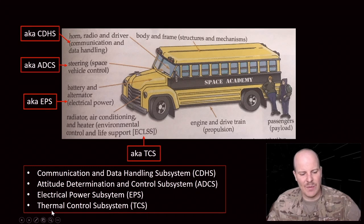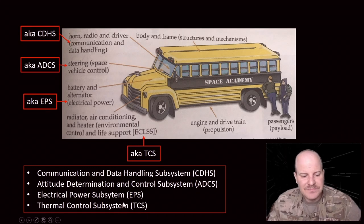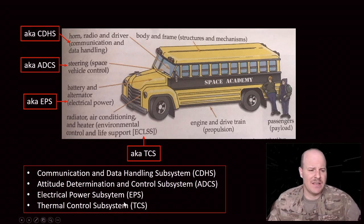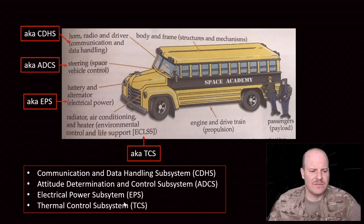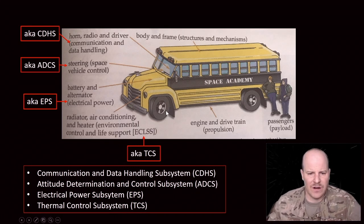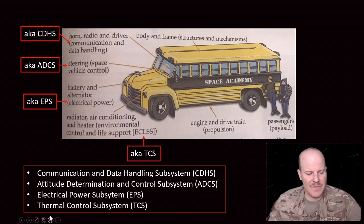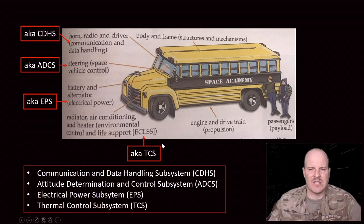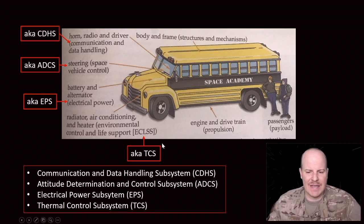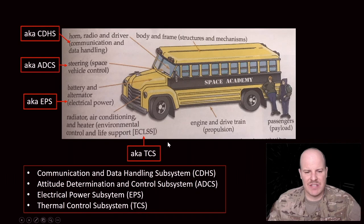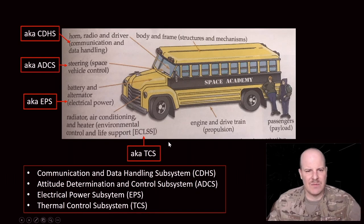The EPS, or Electrical Power Subsystem, is really like the battery and alternator for our bus, and for our spacecraft it's going to be our solar panels. And then lastly, the TCS, or Thermal Control Subsystem, is really how the spacecraft modulates its own temperature and keeps different surfaces at the temperatures that it wants. So that's an overview of what these subsystems would look like.